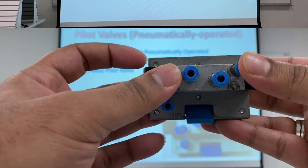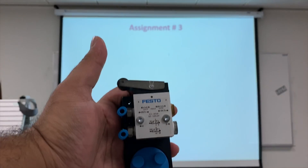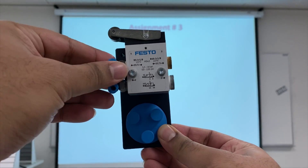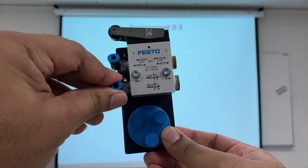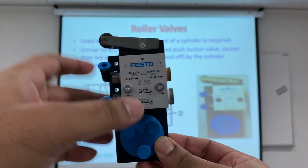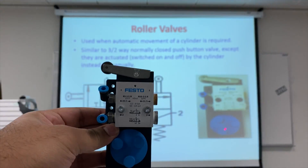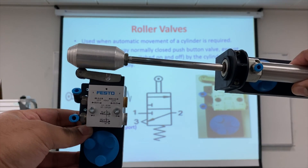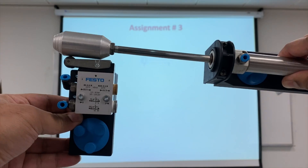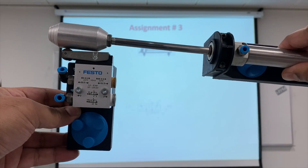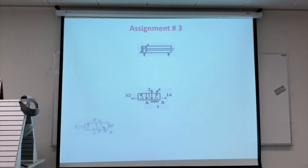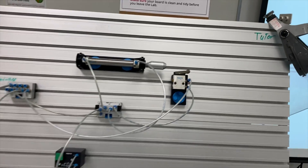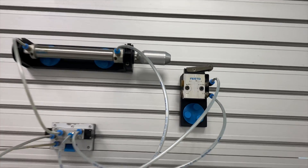This is the roller valve. Port one is where the air supply is connected, and this is the output. This is the roller — it is used with a cylinder. When the cylinder extends it touches the roller, which activates port two, so they both have to work in conjunction together. This is a three-by-two way roller valve.